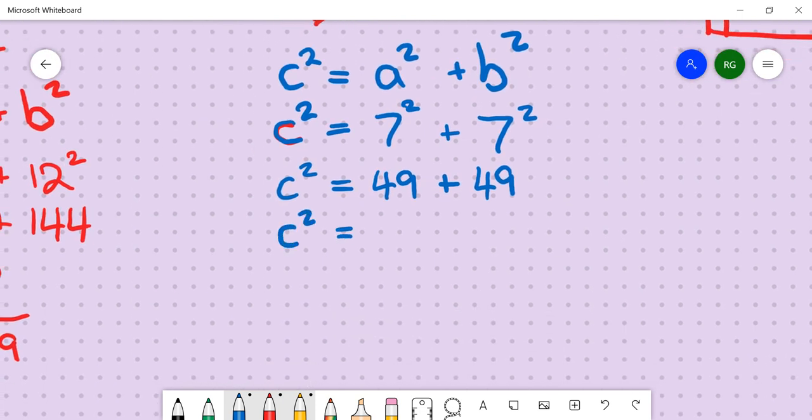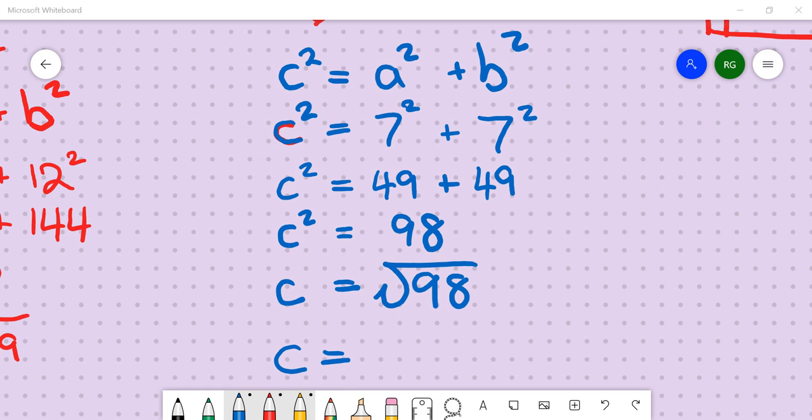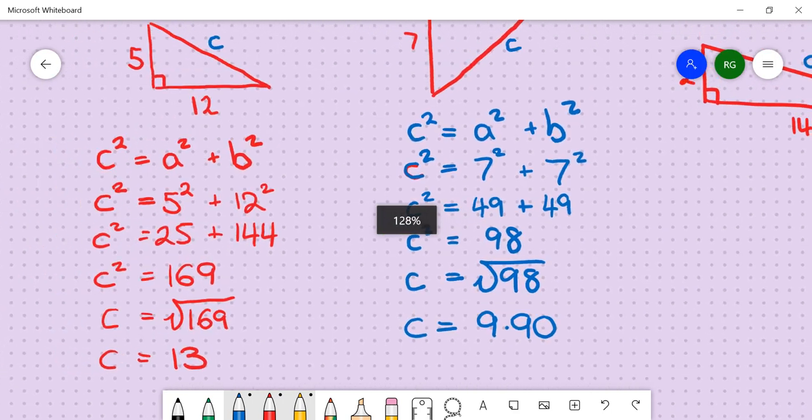So c squared equals 98. We need to work out the square root of 98, so that we can work out what just c is, not c squared. Now, I know that that's got to be just less than 10, because 10 squared would be 100. So the square root of 98 is 9.90 when rounded to two decimal places, just less than 10.